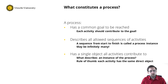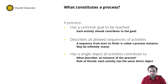While modeling a process, you always need to ask yourself: what is the process instance resembling? What is the object that flows through the process? Typically you can locate this object in an information model of the context. A good rule of thumb is that each activity should have the same direct object, and this direct object is the process instance.